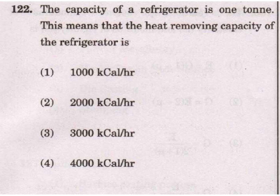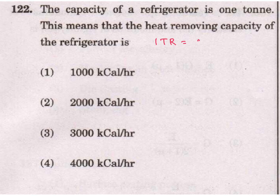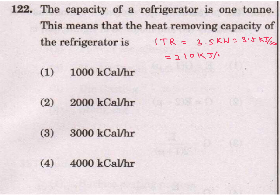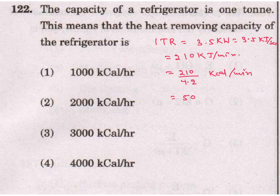The capacity of a refrigerator is 1 ton. This means the heat removing capacity of the refrigerator is measured in kcal per hour. 1 ton of refrigeration equals 3.5 kW or 3.5 kJ per second, which is the same as 210 kJ per minute. Dividing by 4.2, it comes to 50 kcal per minute.